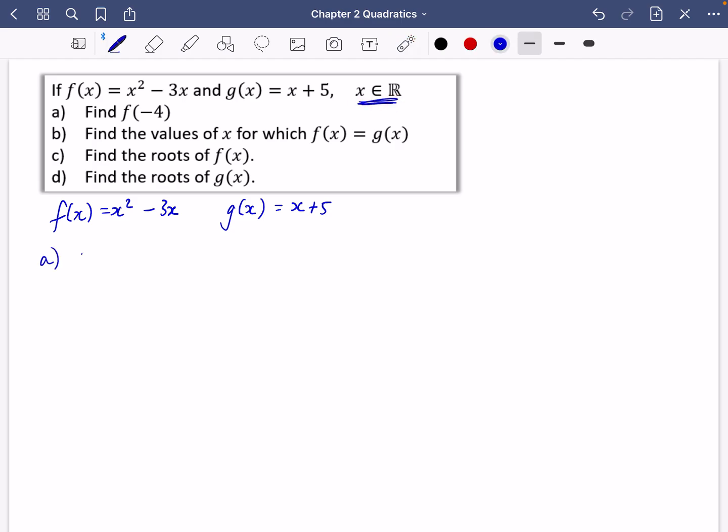Part A of the question says find f of minus 4. This actually means you're taking minus 4 as the input and putting it through this machine. So it would be minus 4 squared minus 3 multiplied by minus 4. Minus 4 squared is 16, and negative 3 times negative 4 is 12. So we get 28.